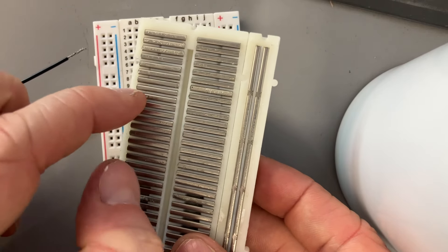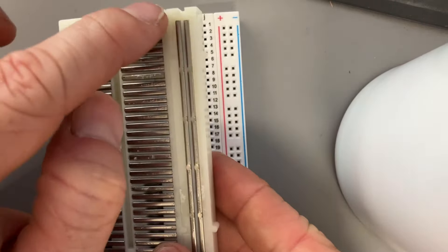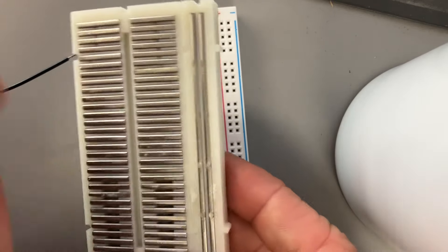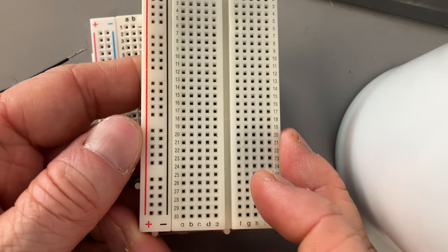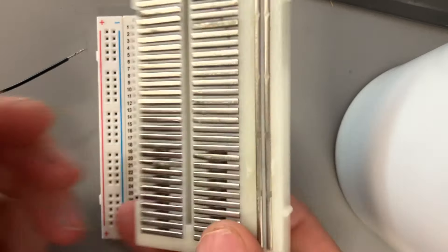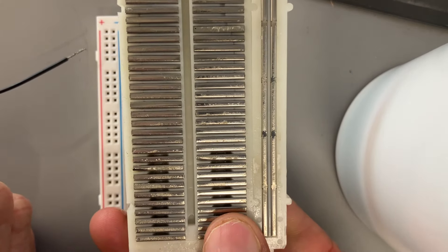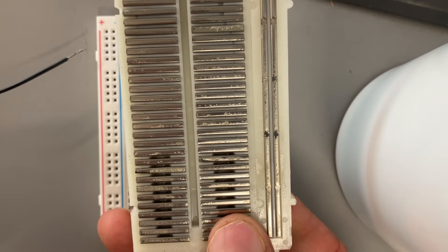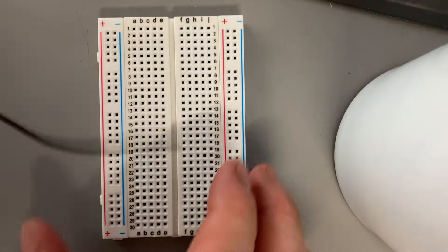Five across, five across, five across, and then the outsides go positive and negative all the way vertically. On the front side, it looks like this, and it's just a series of metal connections. Anything I plug in will be connected to anything that it's touching metal-wise on the underside.